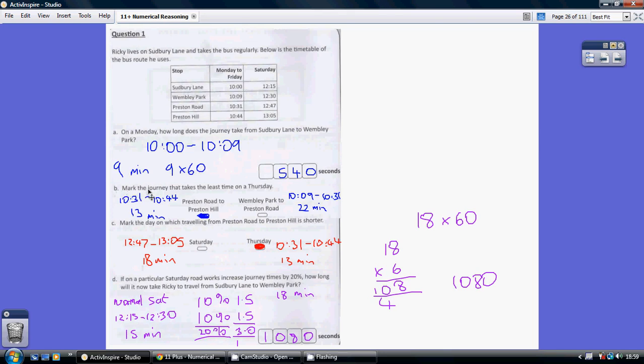Now, for Part B, mark the journey that takes the least time on a Thursday. So, again, Thursday, so we're still looking at this column Monday to Friday.